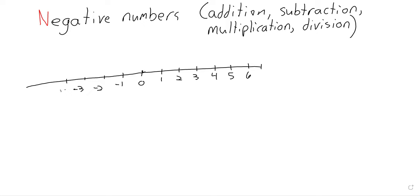A traditional way of introducing negative numbers is to think of debt. I owe you something — I owe you five apples. How many apples do I have? Well, there are none in my hand, but it's worse than having no apples, because not only do I have no apples, I owe somebody else five apples. So you can say we have negative five apples.